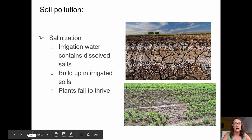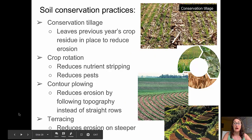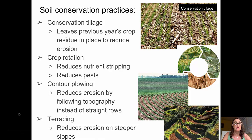Some soil conservation practices are having a big impact. Things like conservation tillage, shown in the top picture — a farmer has left residue from a previous year's crop to protect the soil from eroding away. Crop rotations help to reduce nutrient stripping and reduce pests; this circle diagram shows a rotation between corn, soybeans, and wheat. Contour plowing reduces erosion by following the topography around rather than plowing in straight rows. And terracing — such as rice paddies — reduces erosion and allows farming to occur on steeper slopes.